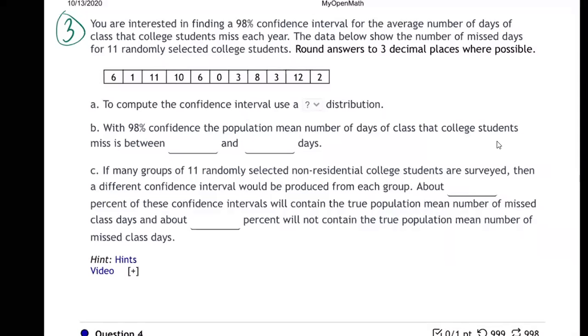So now on number three, we're still doing confidence intervals. You're interested in finding a 98% confidence interval for the average number of days of class that college students miss each year. You guys don't miss any class, right? The data below shows the number of missed days for 11 randomly selected college students. Round your answers to three decimal places where possible.